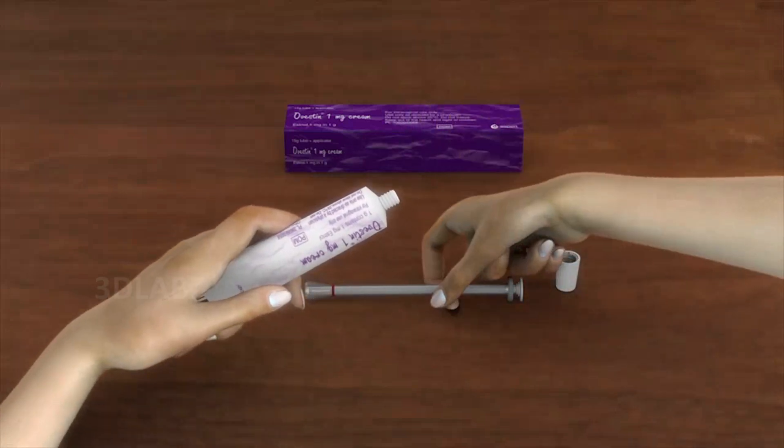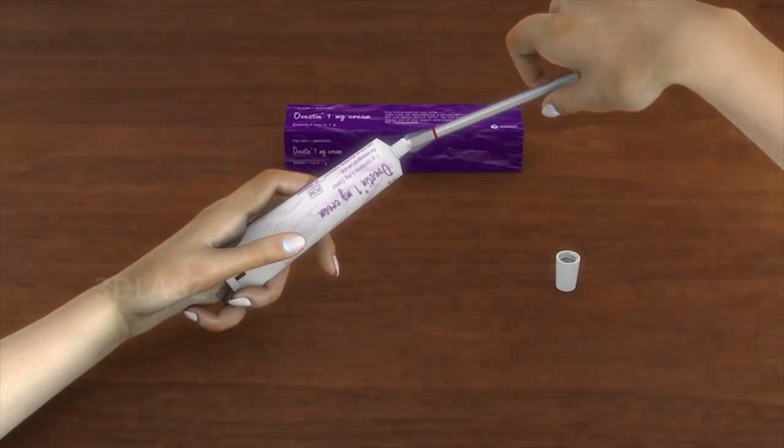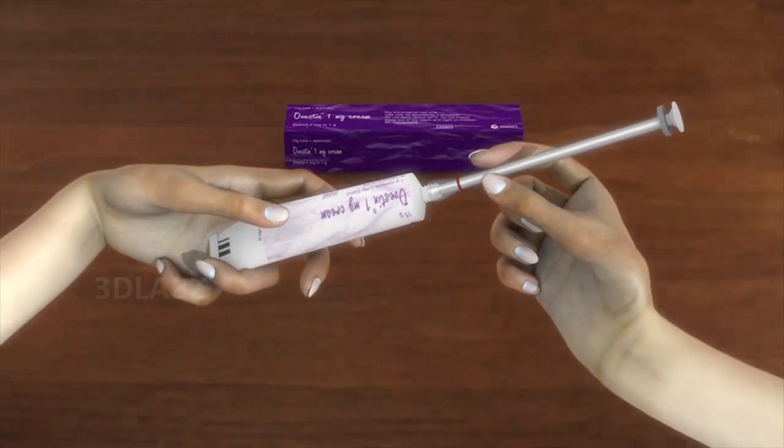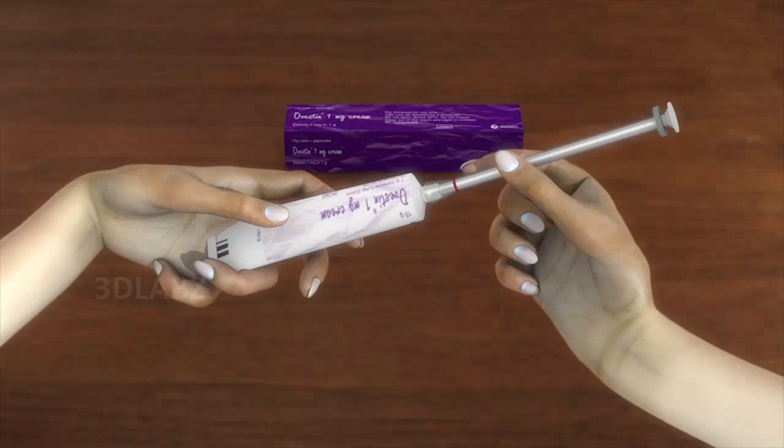Step 2. Screw the end of the applicator onto the open end of the tube. Make sure that the plunger of the applicator is pushed all the way down into the barrel of the applicator.